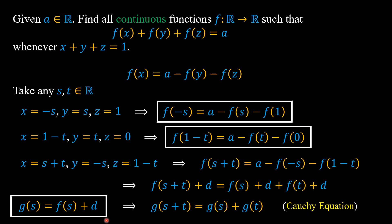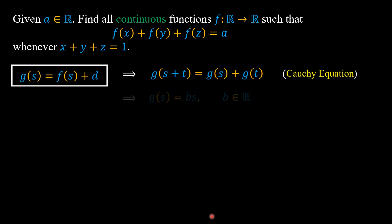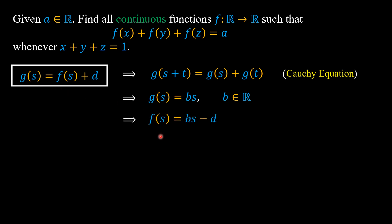Since f(s) is a continuous function and d is a constant, and constant functions are always continuous on real numbers, g is also continuous. By Cauchy's theorem, the only continuous solutions of the Cauchy equation are g(s) = b·s where b is a real number. Substituting back the definition of g, we have f(s) = b·s - d.